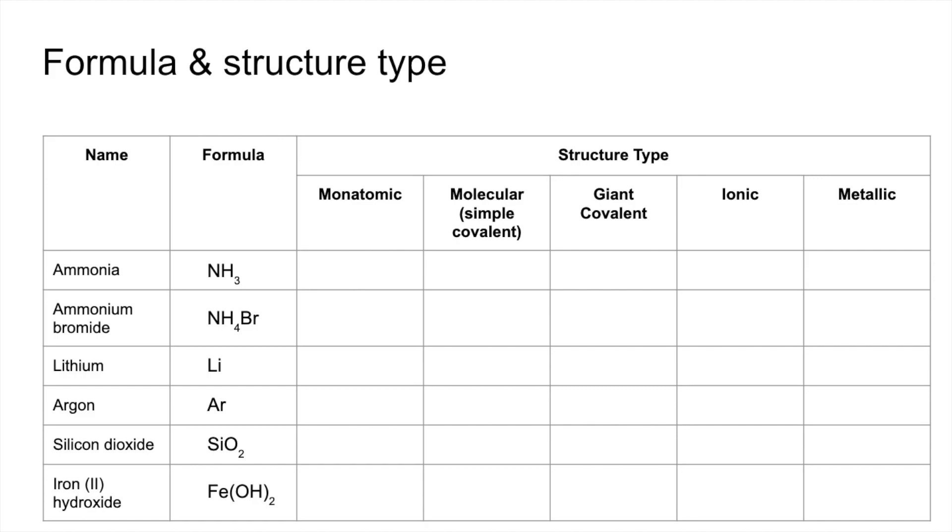So structure type now. Ammonia is a simple covalent or a molecular substance. Ammonium bromide is ionic. Lithium metallic. Argon is monatomic, so it goes around as single atoms. Silicon dioxide has a giant covalent structure, and iron(II) hydroxide is ionic.